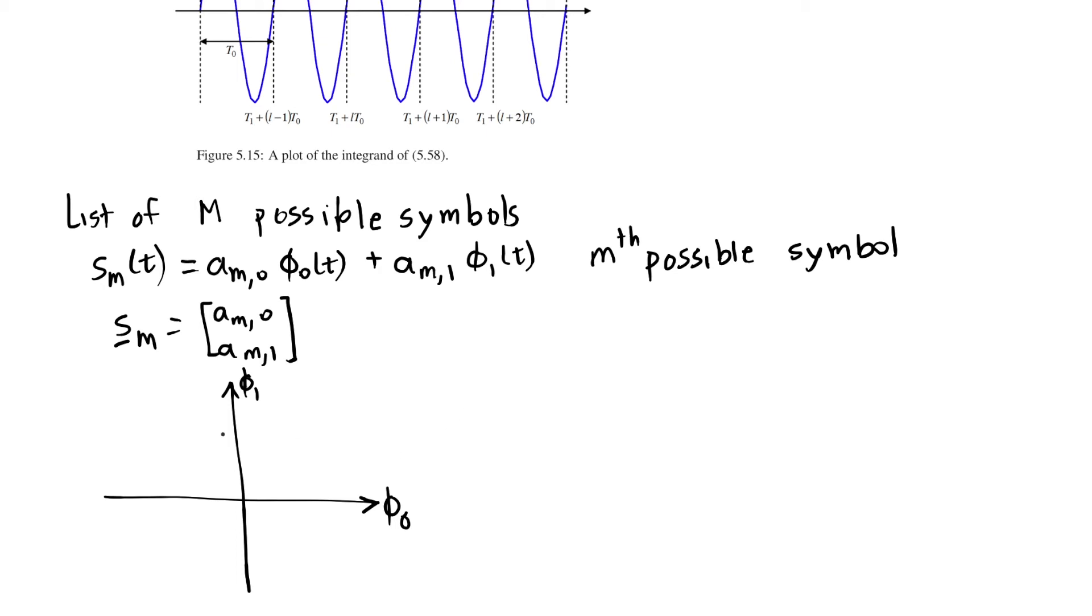So for square QAM, we would draw a grid of symbols, capital M symbols, in a square. This would be an example of 16 square QAM, and we're naming it square just because I've arranged the points on a grid that is four by four, that is a square, evenly spaced along the x-axis and evenly spaced along the y-axis.